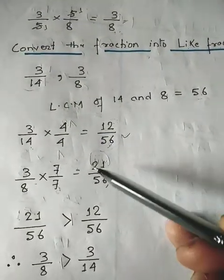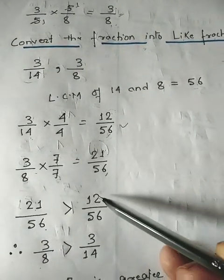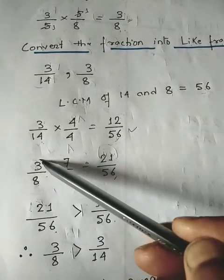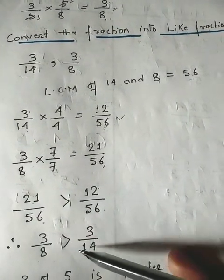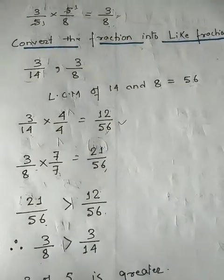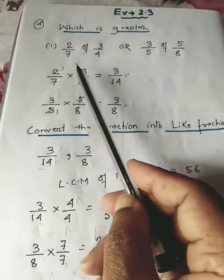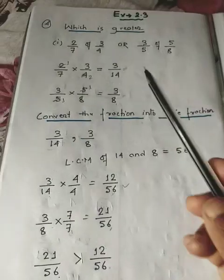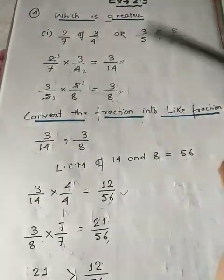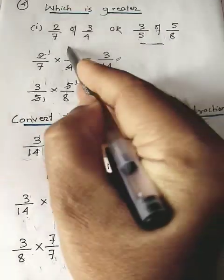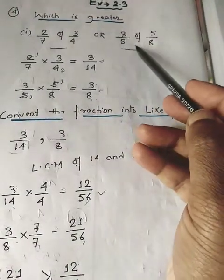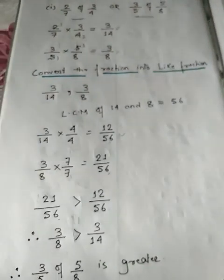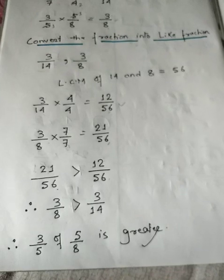Is 12 greater or 21 greater? Obviously 21. So 21/56 is greater than 12/56. Since 21/56 is originally 3/8, we write 3/8 is greater than 3/14. Going back to the original question, 3/5 of 5/8 is greater than 2/7 of 3/4. You can express your answer either way.